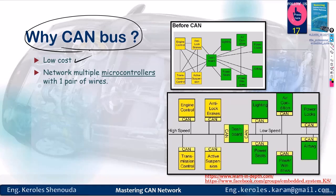Why do we use the CAN bus? The first reason is it's low cost. It consists of just two wires, and the associated CAN controller is inexpensive to produce, meaning its manufacture isn't challenging.